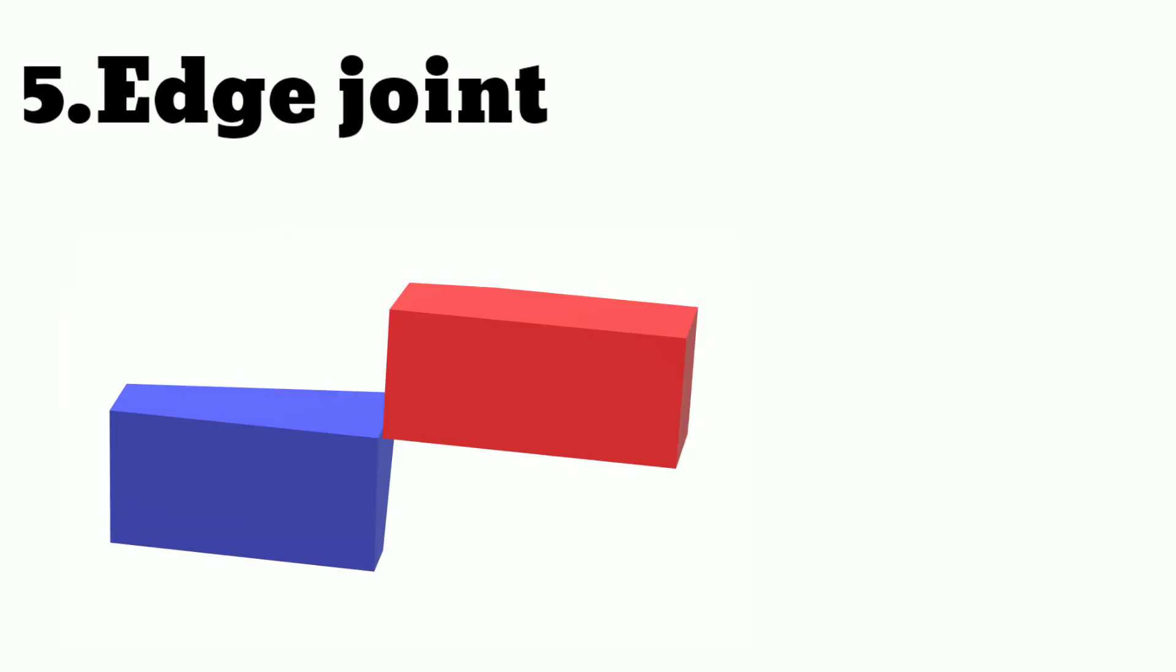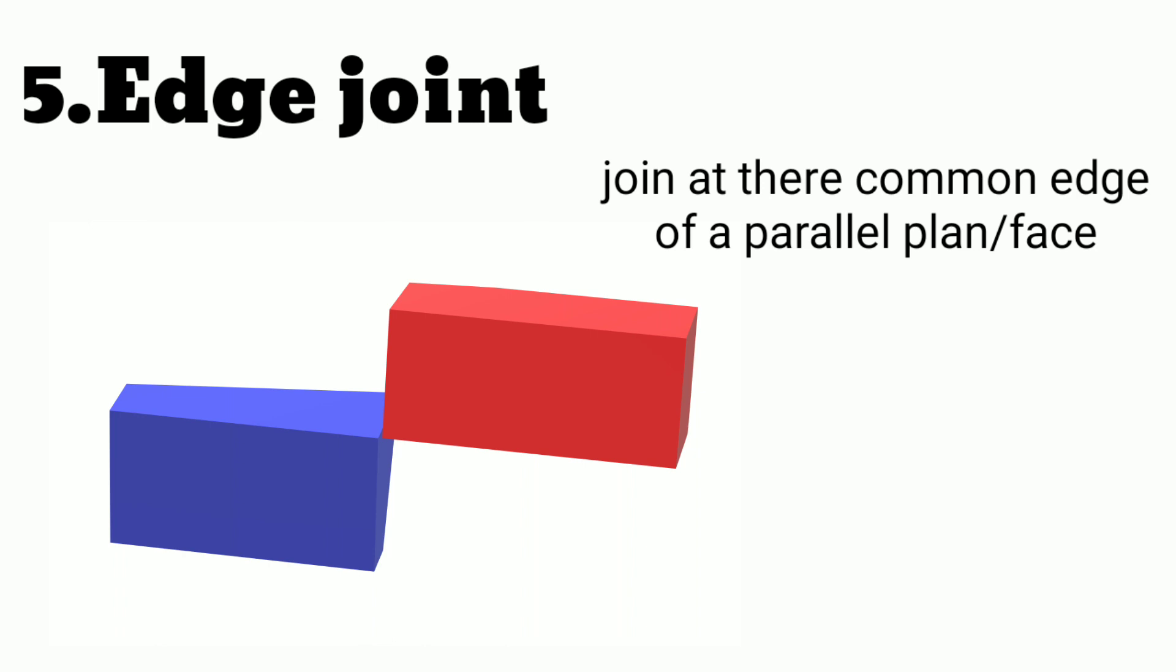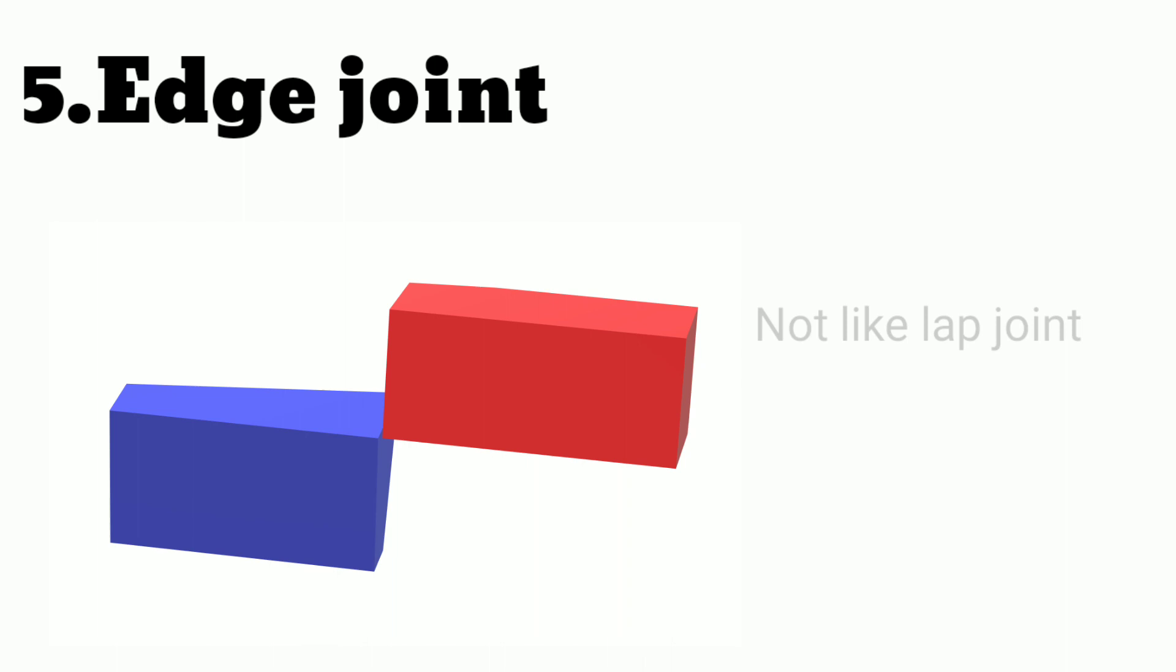Now the last one is edge joint. In this type of joint, the parallel edges of two parts are joined together. It is not a lap joint because the parts are not overlapping each other, as shown in the figure.